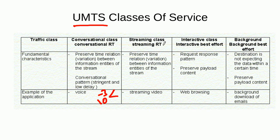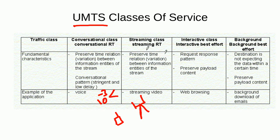Then we come to the streaming class. An example is using YouTube on your mobile — the video uses a streaming service to display on your screen. In this case we also need to preserve the time relationship between packets coming from the internet, but the bit error rate must be lower than the conversational class, in the order of 10 to the power of minus 6 or less.